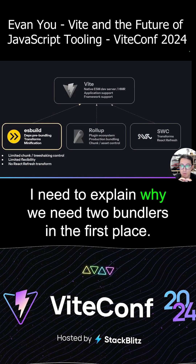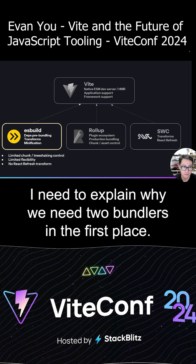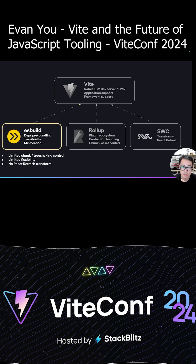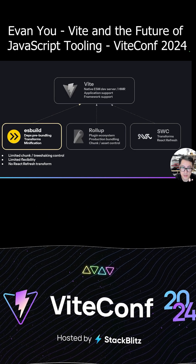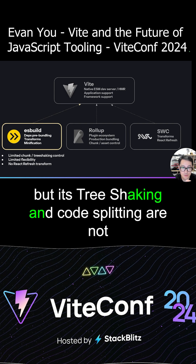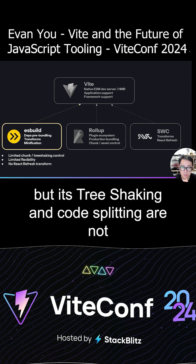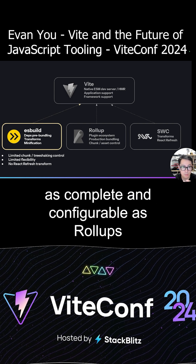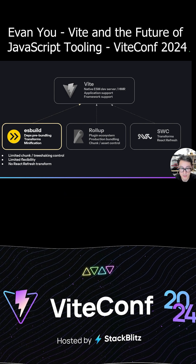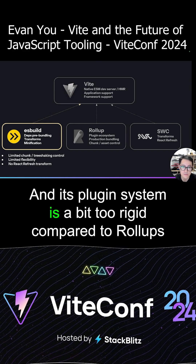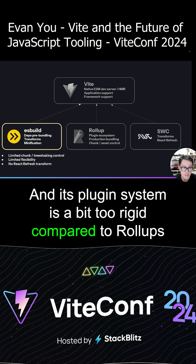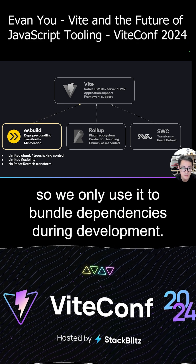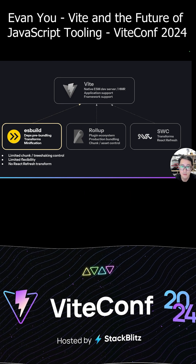First, I need to explain why we need two bundlers in the first place. We use ESBuild, which is blazing fast, but its tree-shaking and code splitting are not as complete and configurable as Rollup's, and its plugin system is a bit too rigid compared to Rollup's, so we only use it to bundle dependencies during development.